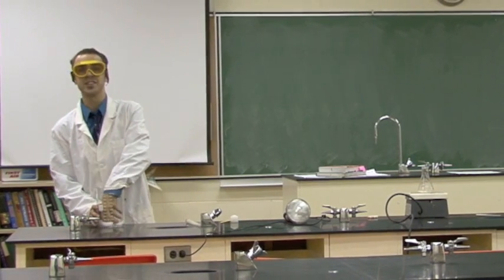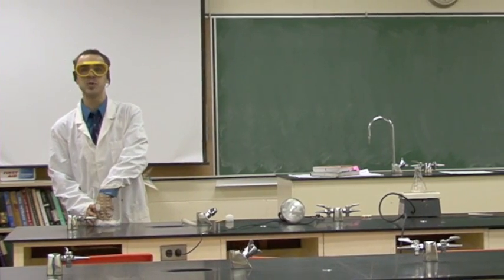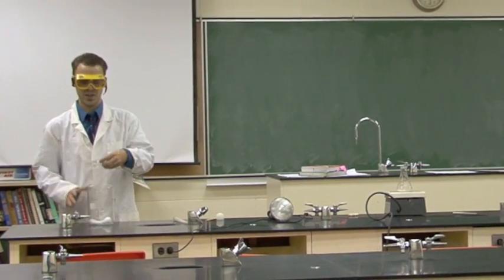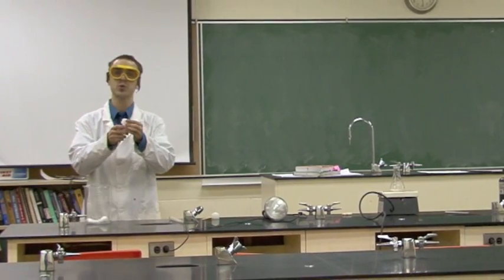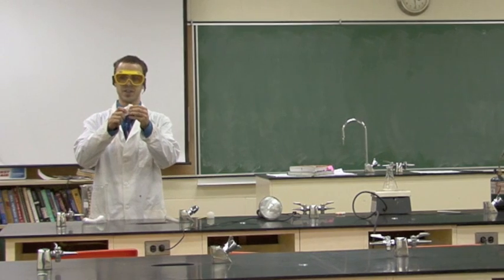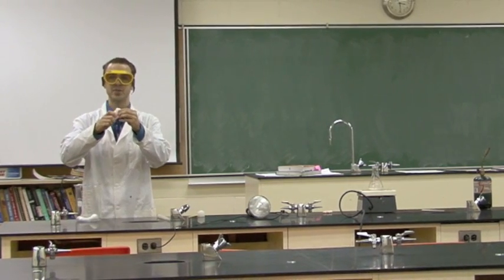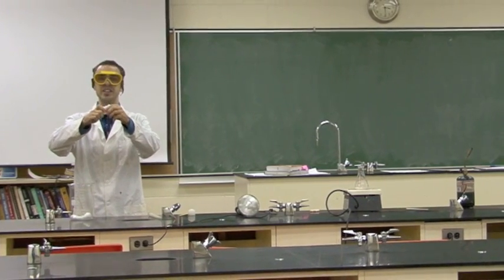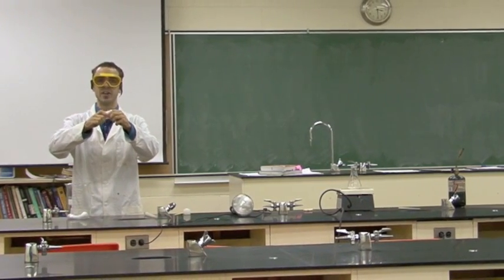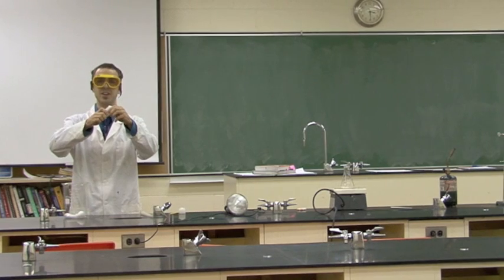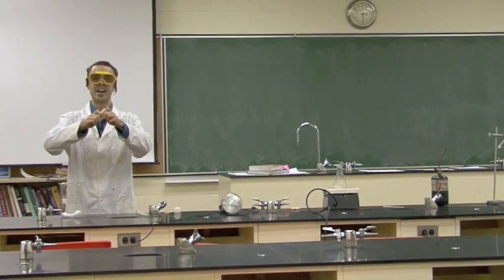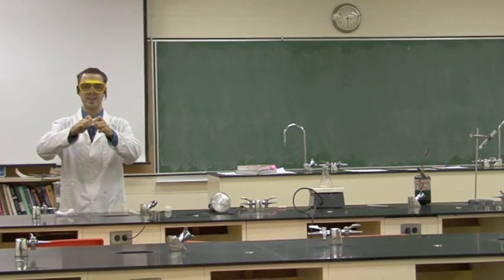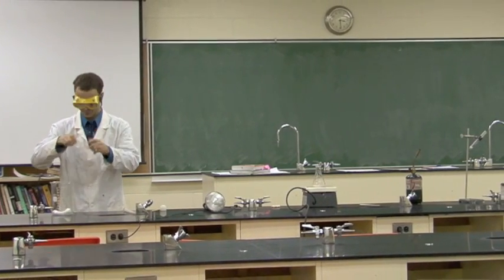Ice is an example of an endothermic reaction. It's cold to the touch, so it's taking in heat from my hands. And as we can see, the ice is starting to melt, so it's heating up, slowly becoming exothermic.